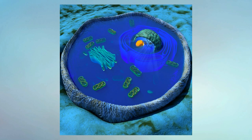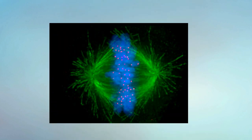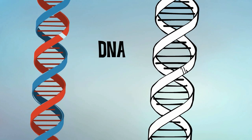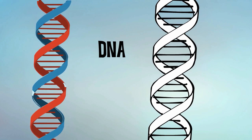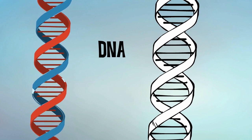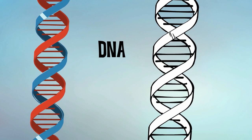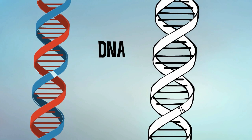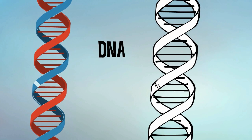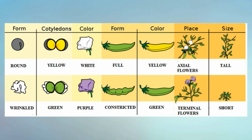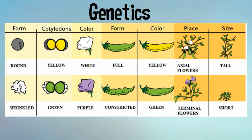Cells are able to reproduce in a process called mitosis, which is part of the cell cycle. The cell cycle starts with interphase and ends with cytokinesis. One of the most important objects found in the cell is the DNA. DNA contains the instructions for the cell. Your DNA allows you to pass traits from one generation to another. The passing of traits from one generation to the next is called heredity. The study of heredity is called genetics. Traits are characteristics that can be passed from one generation to the next, like skin color or hair color.